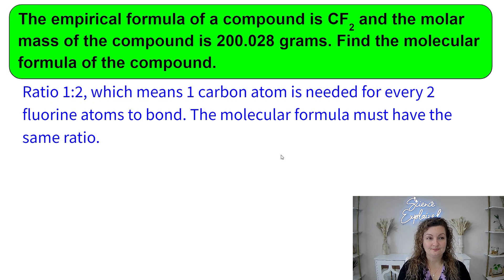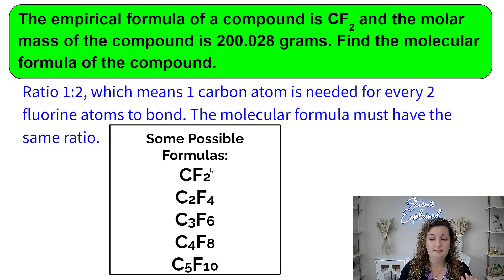Okay, let's go ahead and try another one. The empirical formula of a compound is CF2, and the molar mass of the compound is 200.028 grams. Find the molecular formula of the compound. So let's kind of think of this conceptually really quick, and then I'm going to show you a shortcut in just a minute. So we have CF2. Our ratio is a 1 to 2. I need 1 carbon for every 2 fluorine. That means I can come up with lots of different molecular formulas to match this empirical formula. Here's some possible answers that we can have. Notice I'm increasing 1, but I'm keeping my ratio the same, 1 to 2, 1 to 2, 1 to 2. In other words, if I reduce these down, they're all going to be reduced down to the empirical formula CF2.